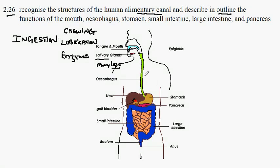The esophagus, labelled here in green, is a tube which carries food from the mouth to the stomach, but in which there is no digestion. The food is able to move down through this tube in a process called peristalsis.